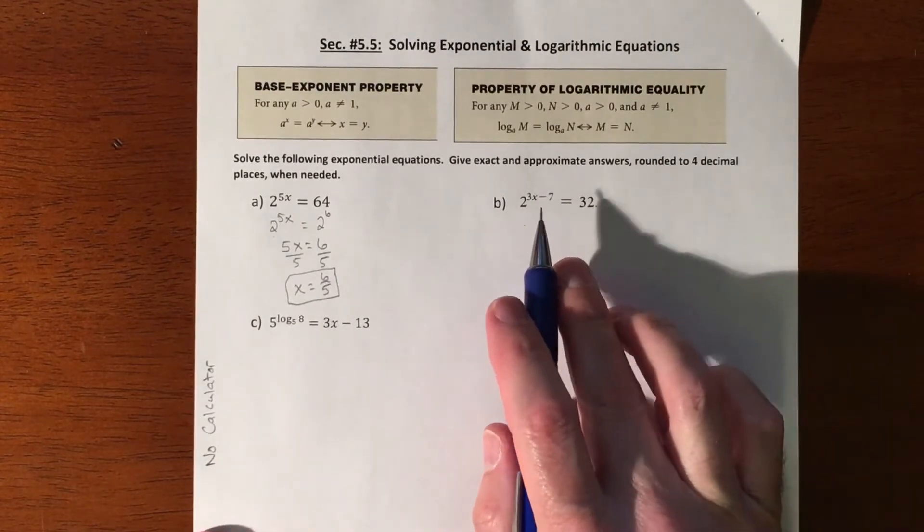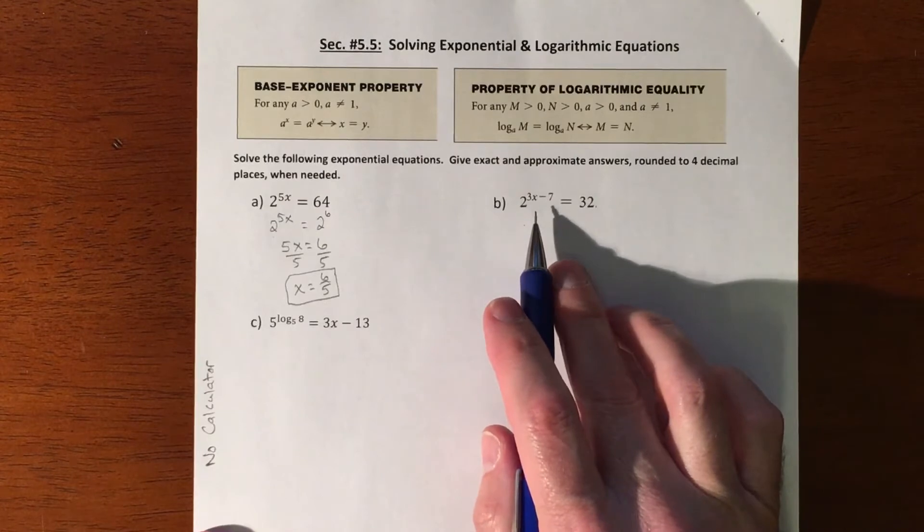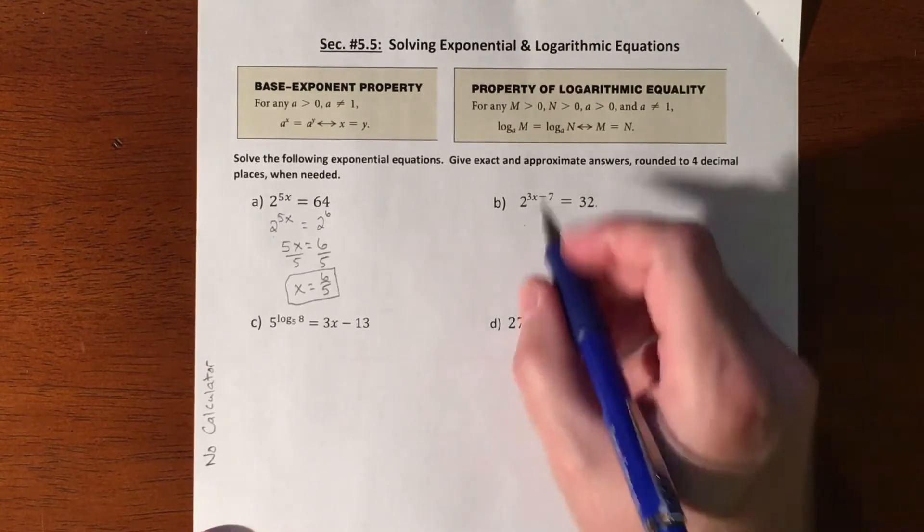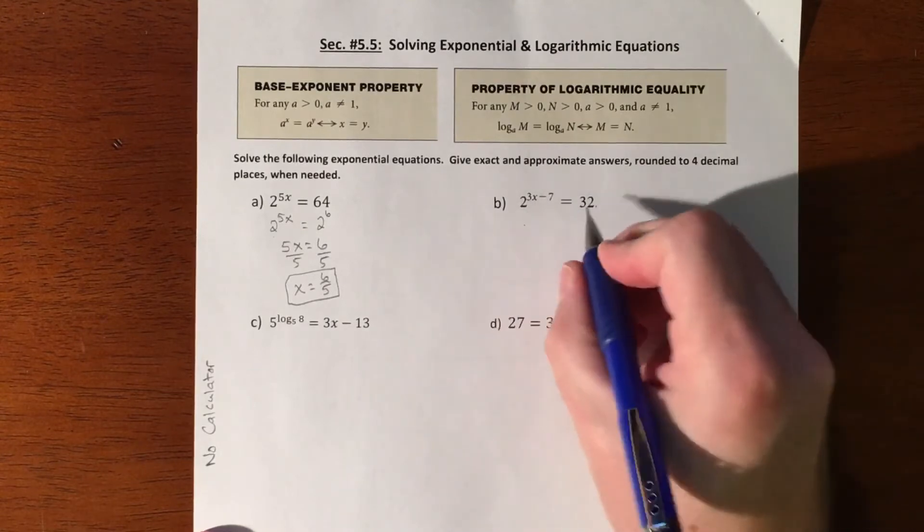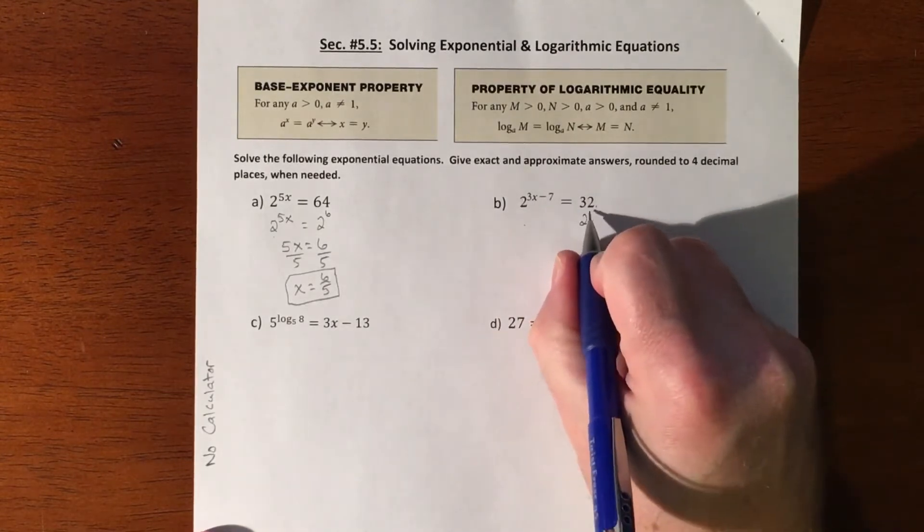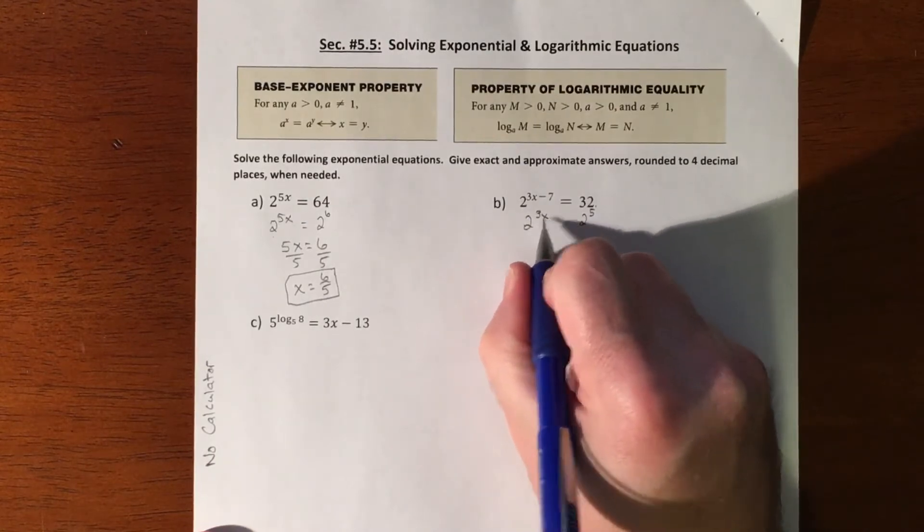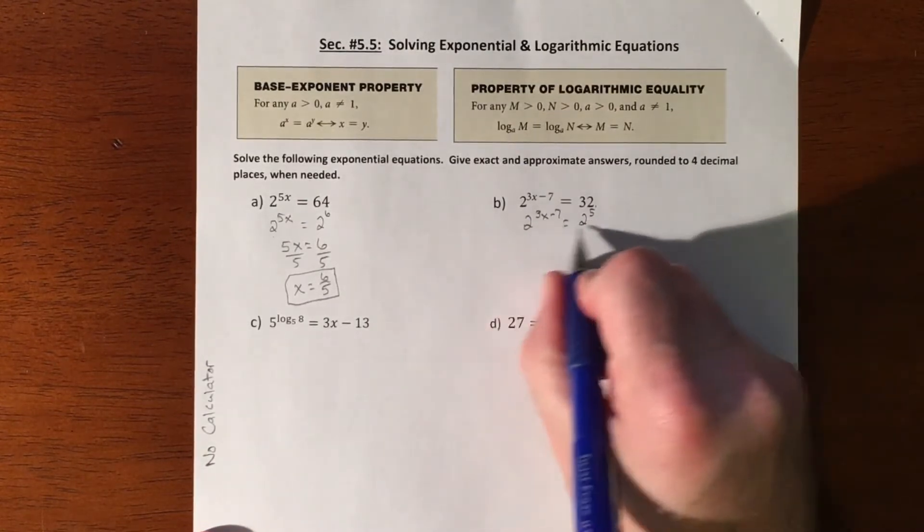So that's going to be basically the idea: if you can get the bases to match, then you don't need a calculator to solve it. So 32 is also a bunch of twos, so that is 2 to the fifth.